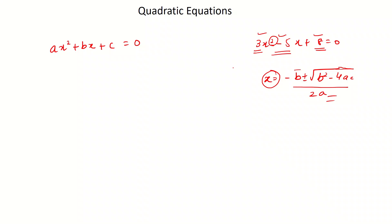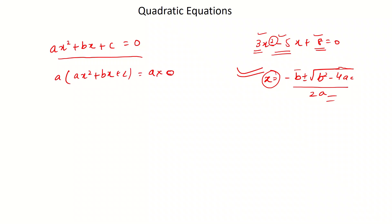Let's see how we derive this formula. We multiply the entire equation by a on both sides. When we multiply by some number on both sides, we inherently assume that number is not equal to zero. So here, we have assumed that a is not equal to zero — this is why the multiplication is valid. If a were zero, you cannot do this multiplication.